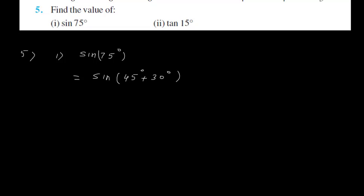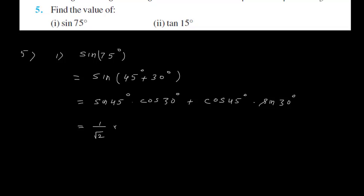So I can say this is sin(45 degree plus 30 degree). Now sin(A + B) is sin A cos B plus cos A sin B. Sin 45 is 1 upon root 2, cos 30 is root 3 by 2, plus cos 45 is 1 upon root 2 and sin 30 is 1 upon 2. Finally you will get root 3 plus 1 whole divided by 2 root 2. This is the value for sin 75 degree.